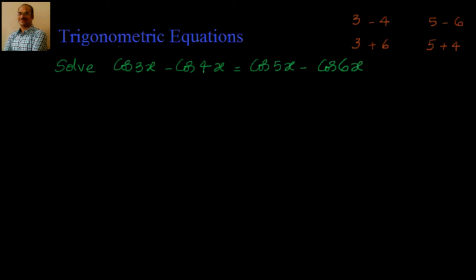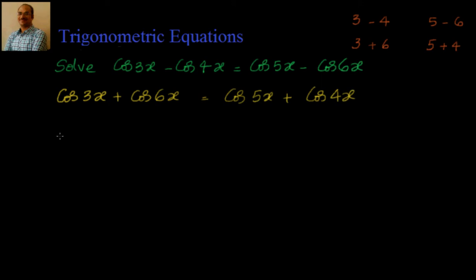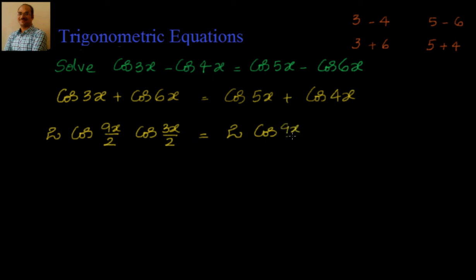So I will write cos 3x plus cos 6x equal to cos 5x plus cos 4x. If you apply the sum-to-product transformation on the left side, it becomes 2 cos((3x+6x)/2) cos((3x-6x)/2), that is 2 cos(9x/2) cos(3x/2). On the right side, applying the same formula gives 2 cos(9x/2) cos(x/2).